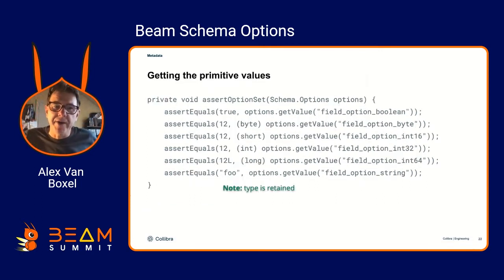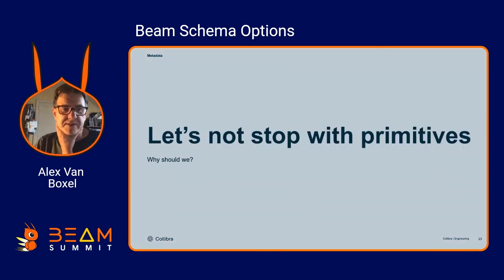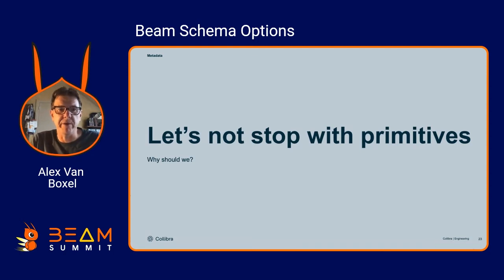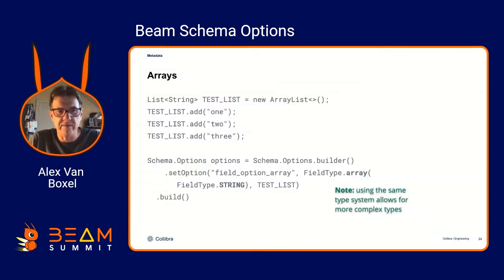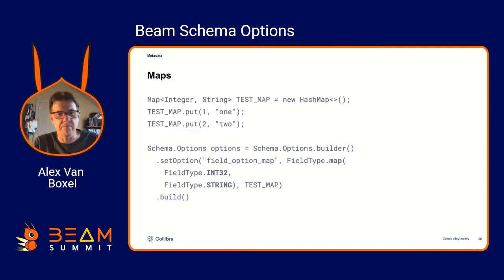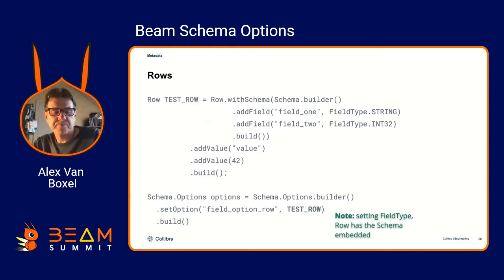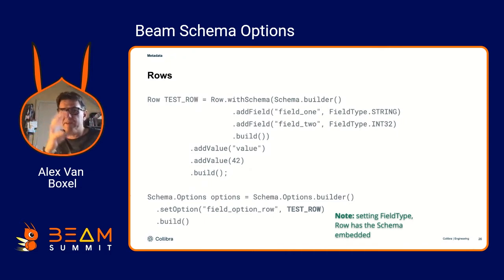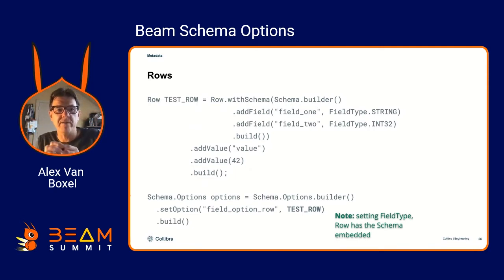When you access those options, they retain the type. But let's not stop with primitives. As you're using the field type mechanism of Beam anyway, it supports arrays — so why not add arrays to the options system? Maps as well, very strictly typed. Here you can have a map with integers mapping to a string. And even rows — important especially for the Proto implementation, which has a very rich data structure for options. With primitives, arrays, maps, and rows, you can do almost everything.